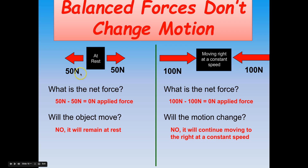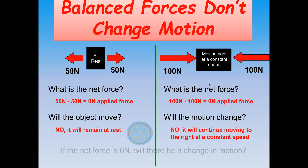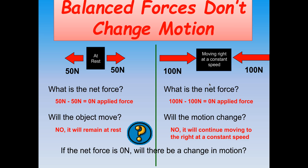An object at rest stays at rest because the forces acting on it are balanced. But make sure you understand that an object can have balanced forces and still be moving, as long as that movement is constant. A constant speed is a result of balanced forces. So if the net force is 0 newtons, there will be no change in motion. An object at rest stays at rest, and an object in motion at a constant speed in a straight line will continue that way as long as forces are balanced.